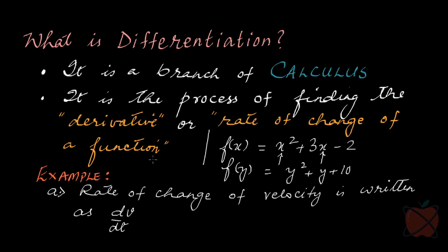When we say the rate of change of a function, what does that mean? For example, the rate of change of velocity — I think you are very familiar with this term. Rate of change is a phrase very often used in physics. The rate of change of velocity is written as dv/dt, or d/dt of v. How do we pronounce it? This is differentiation of velocity with respect to time.